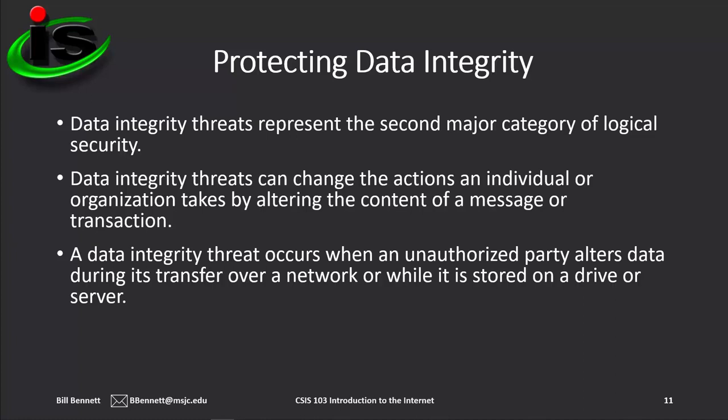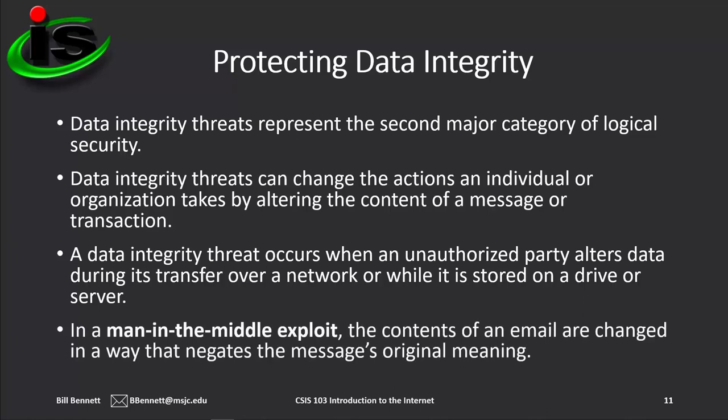In the first case, the company cannot fill an order it never received. In the second case, it loses income it would have earned from legitimate clients. In both cases, the attacker successfully diminishes the reputation and income of the company. Another type of integrity violation occurs when an email message is intercepted and its contents are changed before it's forwarded to its intended destination. In this type of integrity violation, called a man-in-the-middle exploit, a third party alters the contents of a message in a way that changes the message's original meaning.